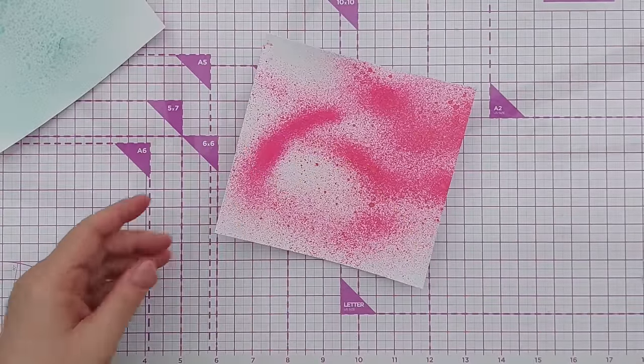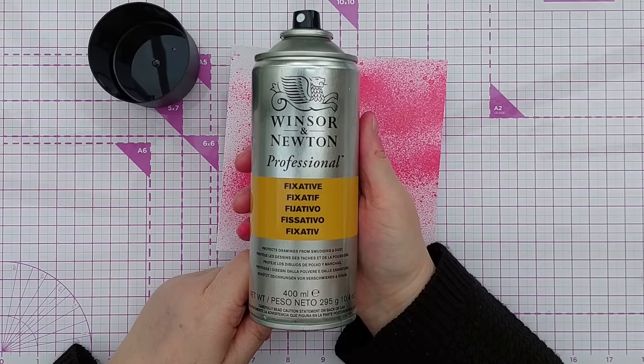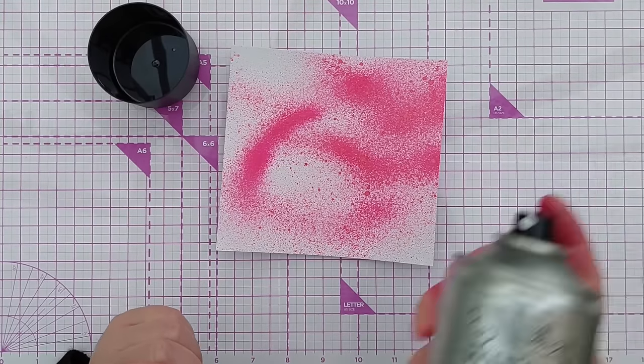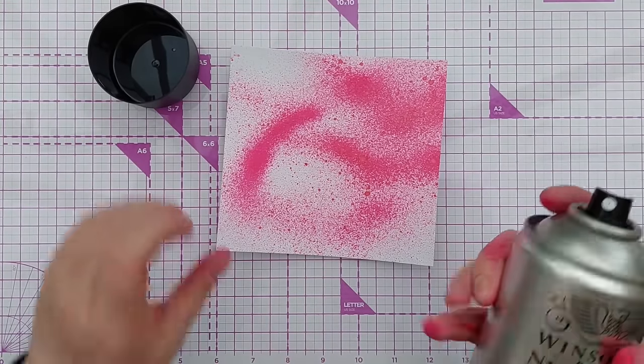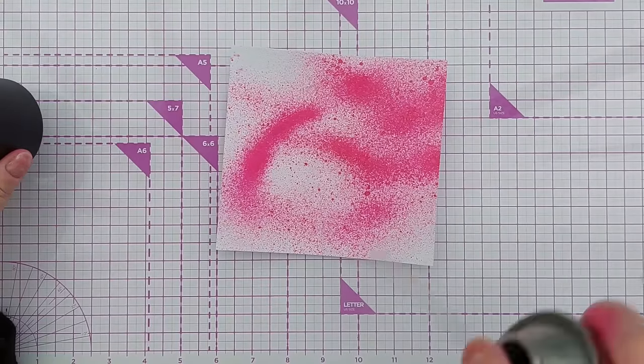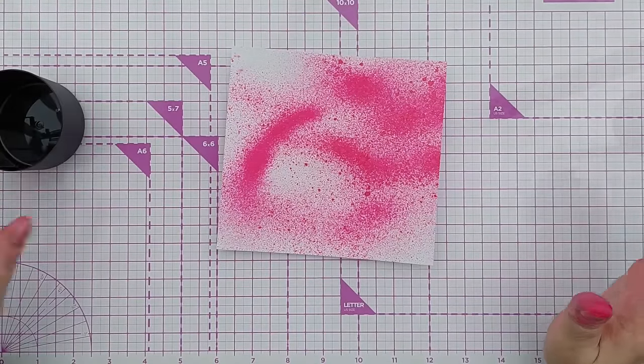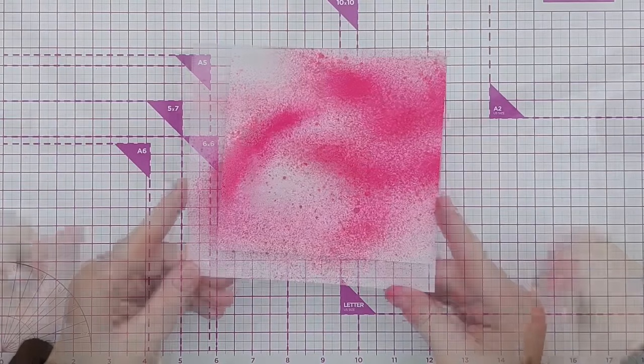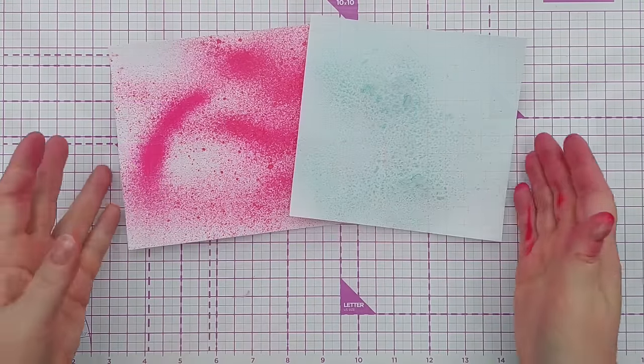This is the fixative I normally use, Windsor Newton professional fixative. Give it a really good shake outdoors or in a very well-ventilated area with your surfaces protected. Spray it from about 12 inches or 30 centimeters away, give it a good coat, let it dry, and that should keep your color and mica on the paper. It doesn't damage the shimmer or shine at all.